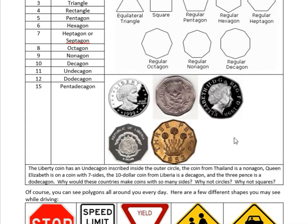Why would these countries make coins with so many sides? Why not circles, and why not squares? So we like circular coins because they do well in vending machines — they roll down without catching. If you wanted some other coin to go into a vending machine, you definitely would not want sharp edges or a square, as that would not roll out when dispensing coins. Also, if coins had sharp edges, those edges start to wear down.